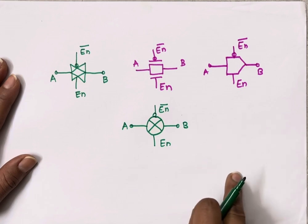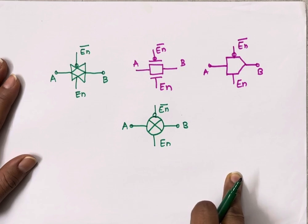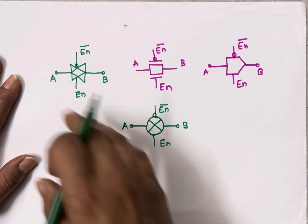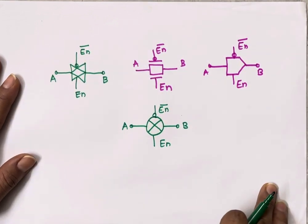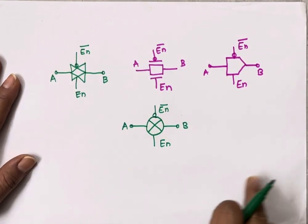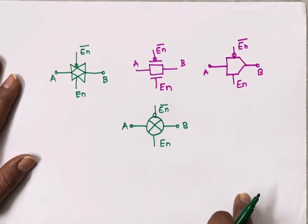I have prepared one more video related to the implementation of a 2-to-1 multiplexer using transmission gate — the link is given in the description box, please check it. If you found this video useful, do like, share, and subscribe to my channel. Thank you so much for watching.